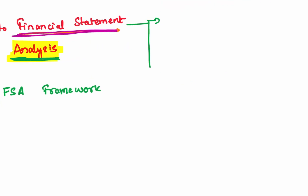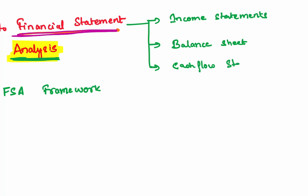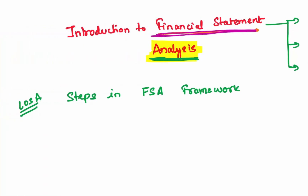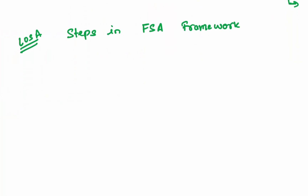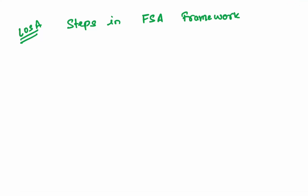Financial statements include your income statements, which have all the details of income, expenses, profits, and gross profits. Then we have the balance sheet, which has all information about assets, liabilities, and equity. And then we have cash flow statements — from where a company is generating cash flow and where they are actually investing that cash flow. We need to do an analysis of all these financial statements, and for that we have six steps.